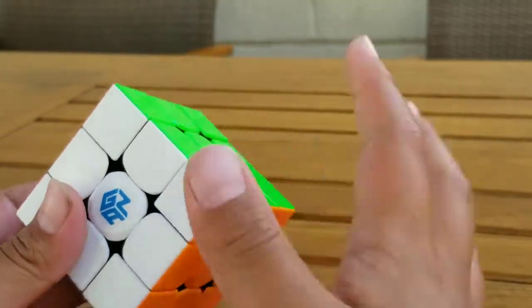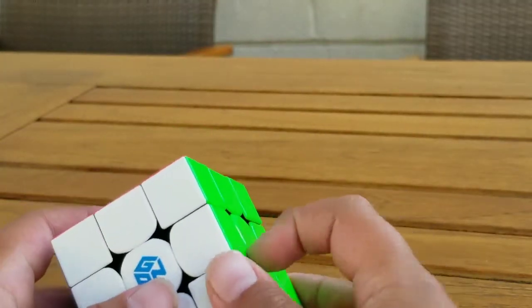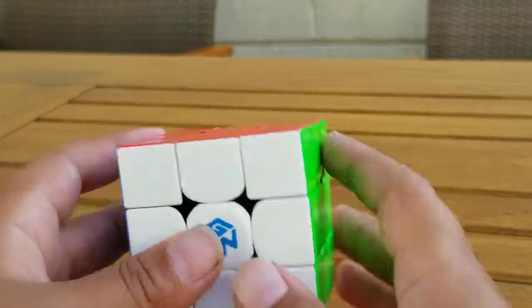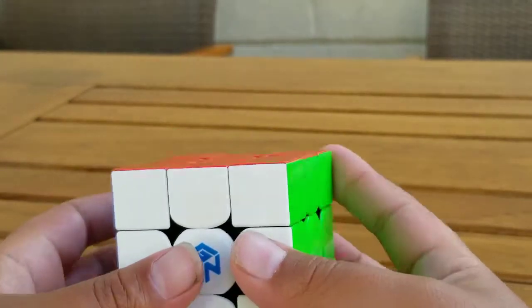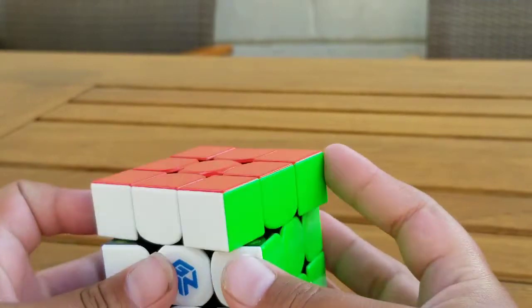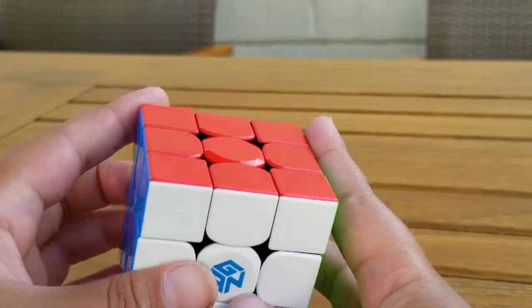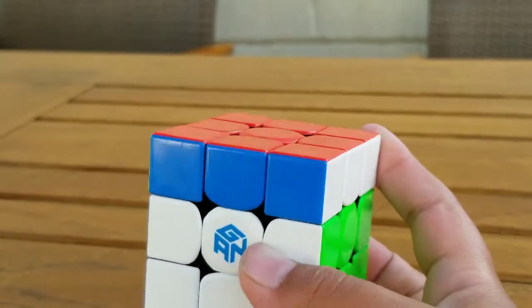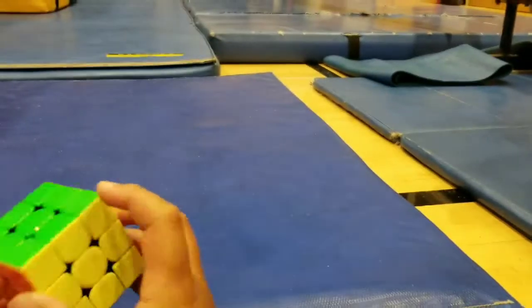Now this is the real basic one actually, my bad. So this is U. Basically you want to have your pointer finger, and then U prime is basically with the other pointer finger. The next thing you